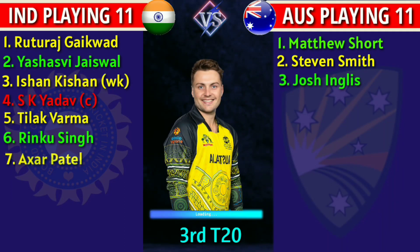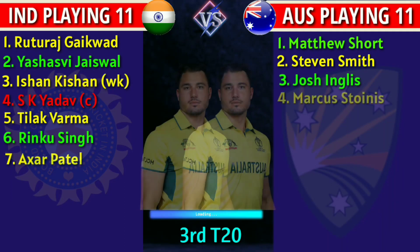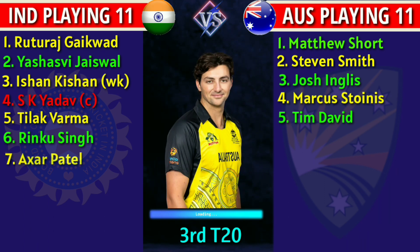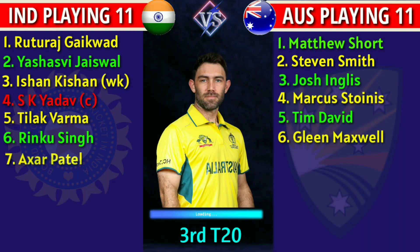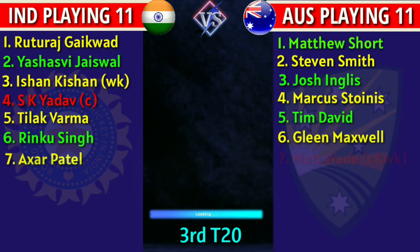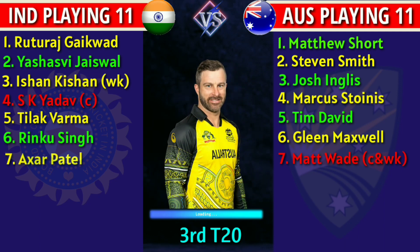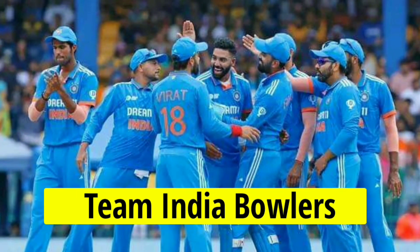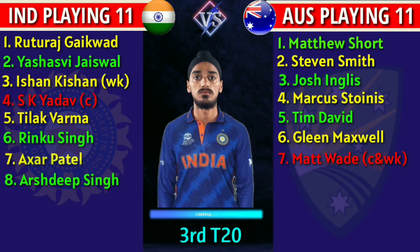Team Australia middle order: 3. Josh Inglis, right-handed batsman. 4. Marcus Stoinis, all-rounder. 5. Tim David, right-handed batsman. 6. Glenn Maxwell, all-rounder. 7. Matthew Wade, captain and left-handed wicketkeeper batsman.